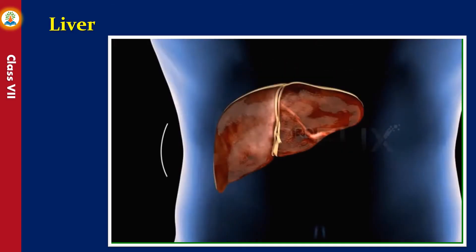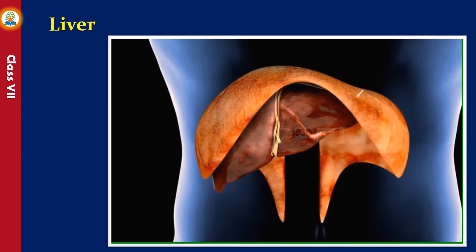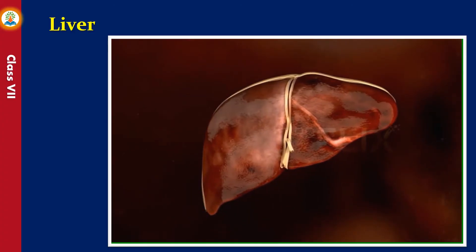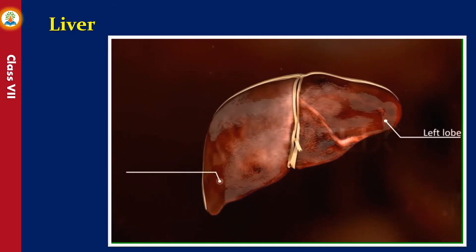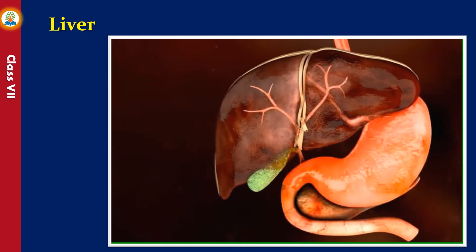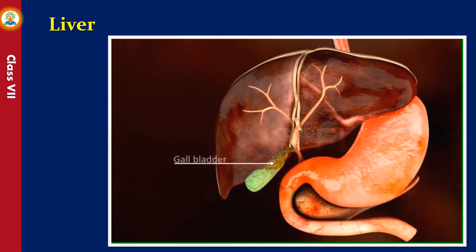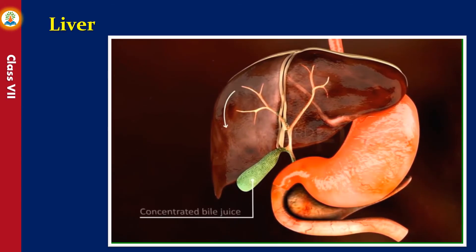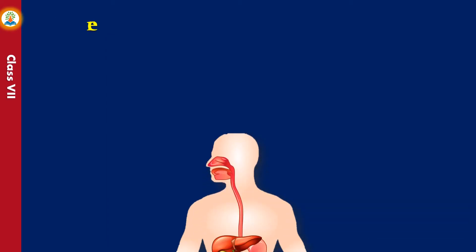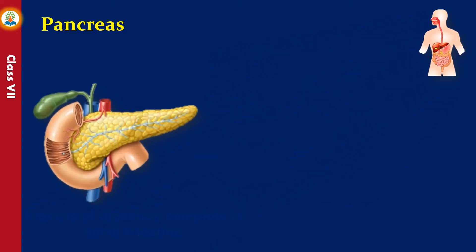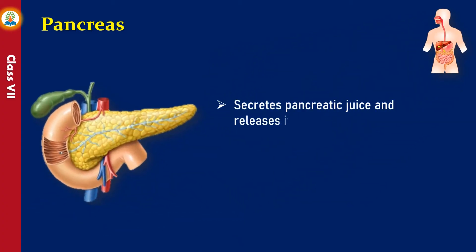The liver lies in the right side of the abdominal cavity just below the diaphragm. It is bi-lobed — divided into a small left and a large right lobe by the falciform ligament. A muscular, greenish-colored sac called the gallbladder is situated on the inferior surface of the right lobe; it stores and concentrates bile juice. The pancreas is a gland located below the stomach; it secretes pancreatic juice and releases it into the small intestine.